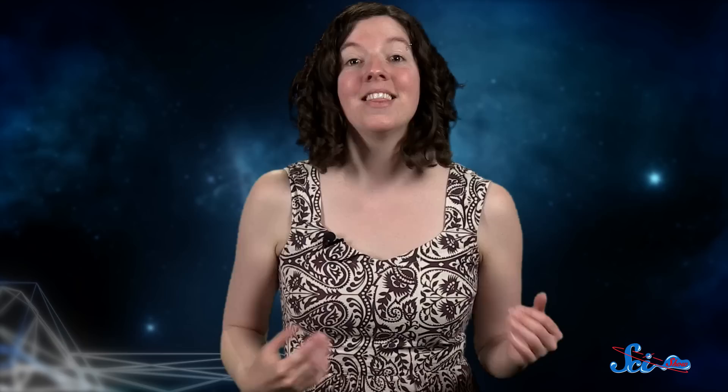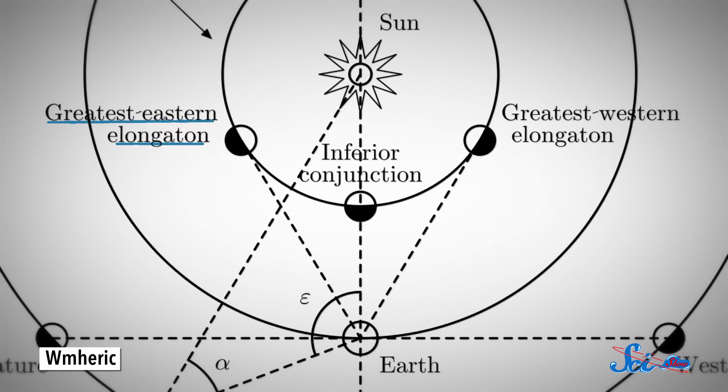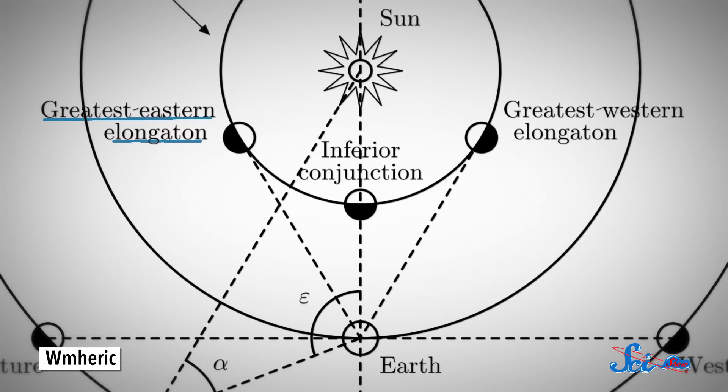And if you ever wanted to get a good look at Mercury for yourself, now's a really good time, at least if you're in the Northern Hemisphere. That's because Mercury is now at its greatest eastern elongation, meaning that its orbit carries it far enough away from the Sun to be visible just after sunset.